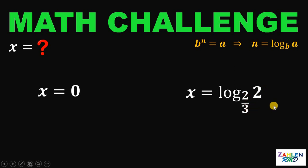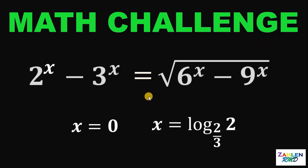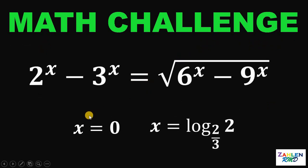And there you go. We have two possible values for x. Therefore, our answer to this question is x equals 0 and x equals logarithm of 2 to the base of 2 over 3. And as always, we are done.